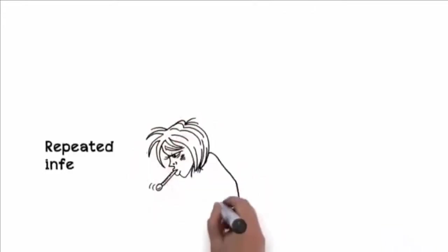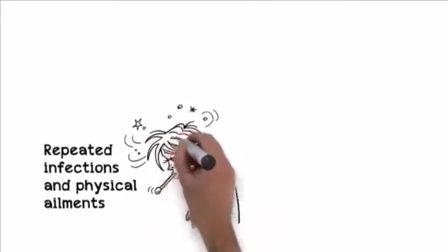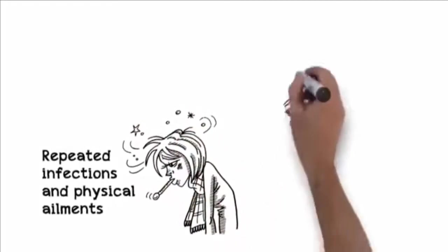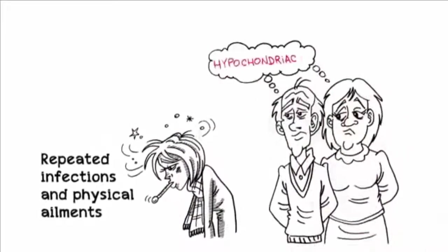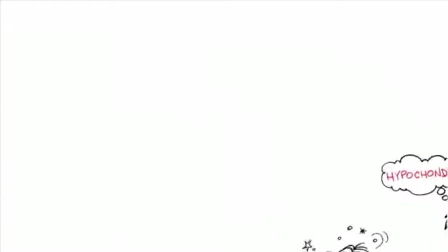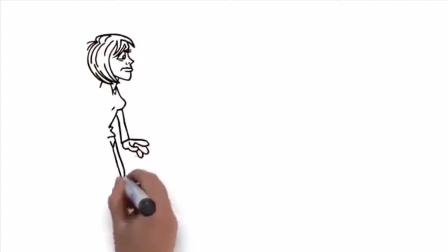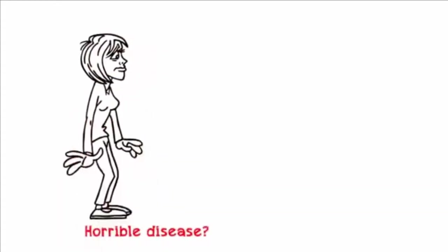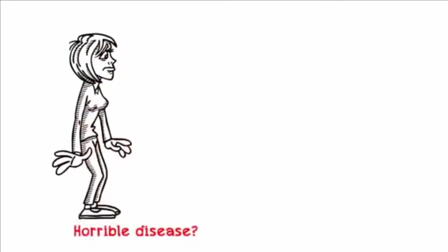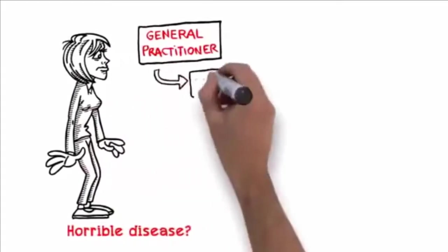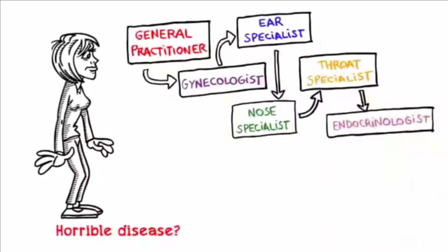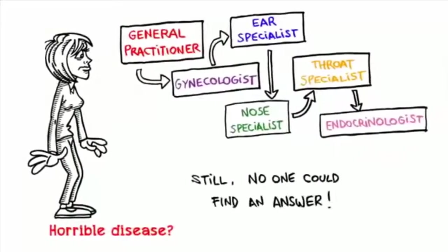On top of these were repeated infections of other types. I always seemed to have a cold, a headache, bronchitis, or some other physical ailment. The people around me began to wonder if I was either a hypochondriac or sicker than I was letting on. I knew that I wasn't making up symptoms, so I began to fear that I had some horrible disease. I began visiting every type of doctor I could get an appointment with. I started with a general practitioner and then moved on to a gynecologist, an ear, nose, and throat specialist, an endocrinologist. Still, no one could find an answer.